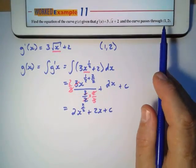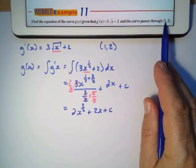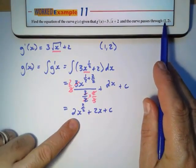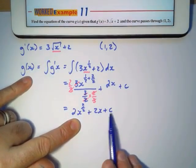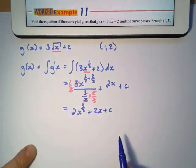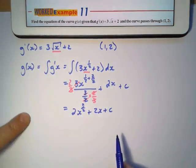Which means, if I substitute x as 1 into this equation and y, which is g(x) in there, I'll be able to find C. Because now, I want to get rid of that C value to find the specific answer.